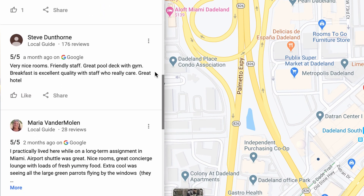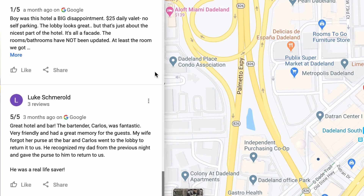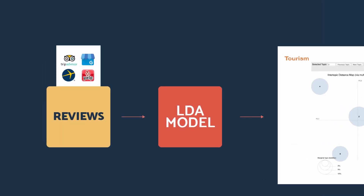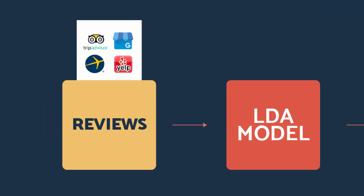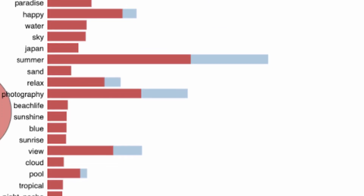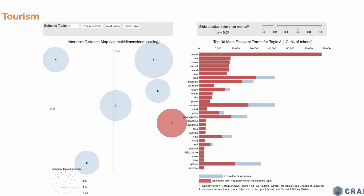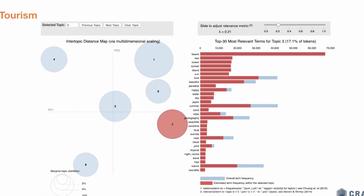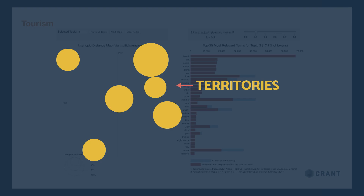Basically, you can take a bunch of review text — say you gather all the reviews for restaurants within a city — feed it into the LDA model, and it's going to analyze each sentence, find how close each word is to other words, and find relationships between words. It shoots out a two-dimensional plot with bubbles of different sizes with different words — we call those territories. The LDA model has summarized all that review text into territories and does a good job of finding the topics.